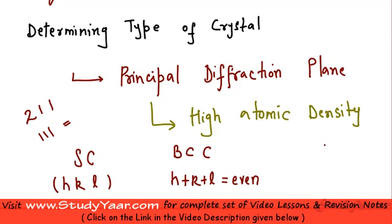For an FCC unit cell, the principal diffraction planes are the planes where h, k, and l are all even or are all odd. So 1 1 0 is not going to be a principal diffraction plane because this is odd, this is odd but this is even.